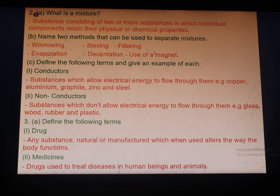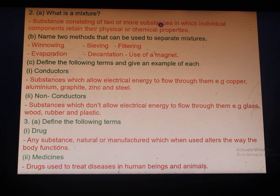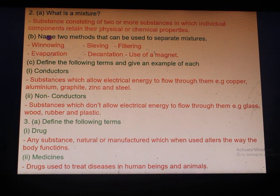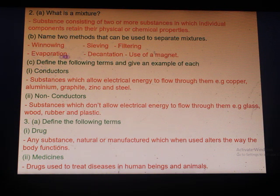Another thing you learned in primary was about mixtures. What is a mixture? A mixture is a substance consisting of two or more substances in which individual components retain their physical or chemical properties. Methods that can be used to separate mixtures include winnowing, sieving, filtering, evaporation, decantation and use of a magnet.